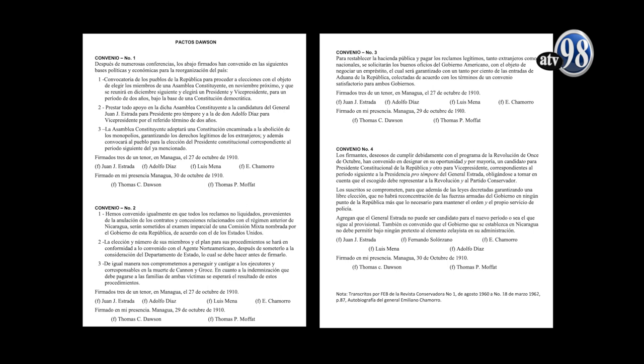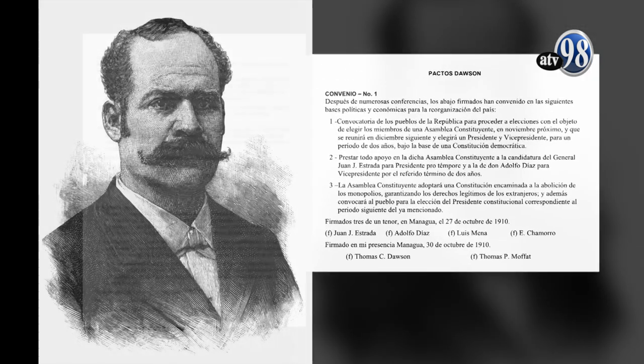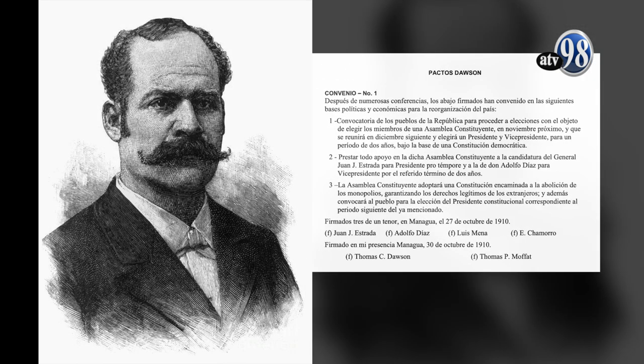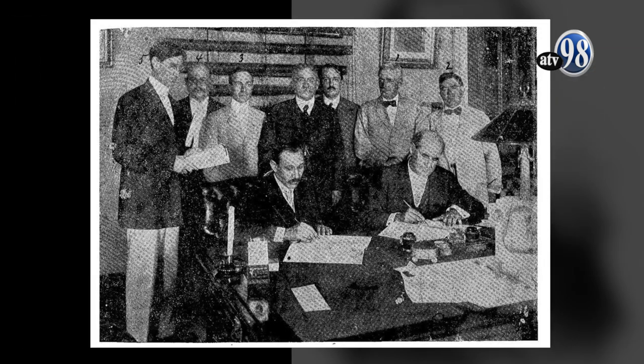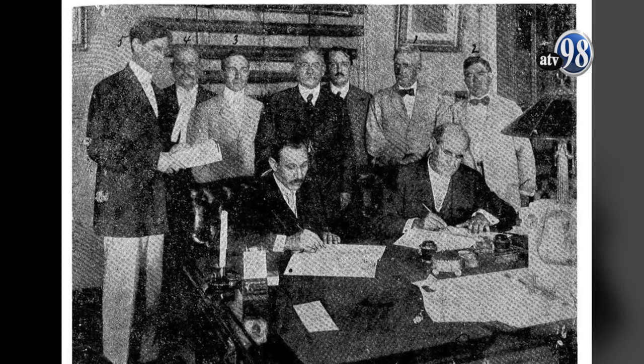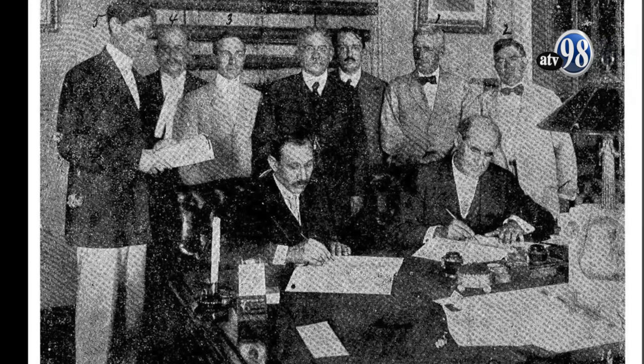Desde el mismo año 1910, en el mes de octubre, se establecieron los Acuerdos Dawson, por el nombre del funcionario norteamericano Christopher Dawson. Estos consistían en las reglas del juego que se establecían a partir de ese año: el engranaje político y la relación del país con Estados Unidos. Estos acuerdos se celebraron entre los protagonistas del derrocamiento contra Zelaya — Estrada y Díaz —, además de Emiliano Chamorro, Luis Mena y Fernando Solórzano del Partido Conservador. Los representantes estadounidenses eran Tomás Moffat, el cónsul de Bluefields, y el mencionado Christopher Dawson.